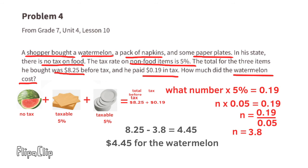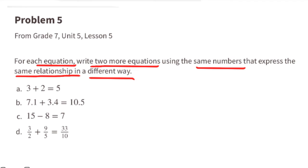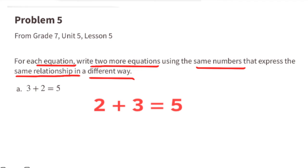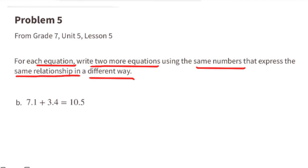Problem 5 from 7th grade Unit 5 Lesson 5: For each equation, write two more equations using the same numbers that express the same relationship in a different way. Part a: three plus two equals five. Two more equations: two plus three equals five, and two equals five minus three. We can also write three equals five minus two.